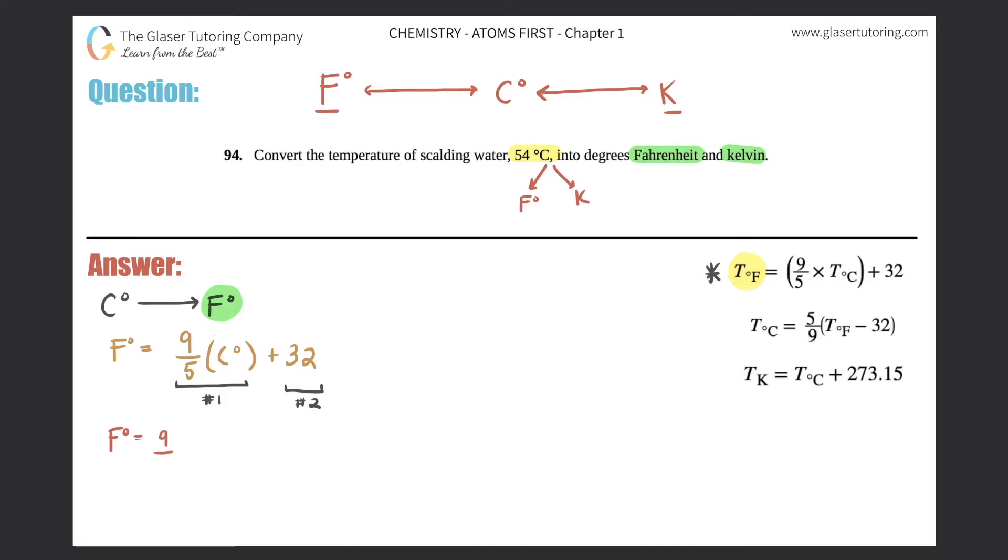So let's plug in these answers now. Fahrenheit equals 9 over 5 times Celsius, which is 54, plus 32. So I'm going to do the first part first. So Fahrenheit would be equal to 9 divided by 5 times 54, which is 97.2. And then you add 32.